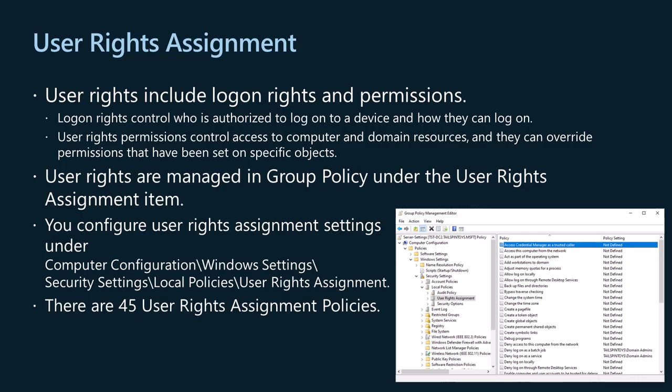User rights include logon rights and permissions. Logon rights control who is authorized to log on to a device and how they can log on. User rights permissions control access to computer and domain resources and they can override permissions that have been set on specific objects. User rights are managed in group policy under the user rights assignment item. Each user right has a constant name and a group policy name associated with it. The constant names are used when referring to the user right in log events. You can configure the user rights assignment settings under Computer Configuration\Windows Settings\Security Settings\Local Policies\User Rights Assignment.